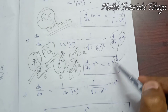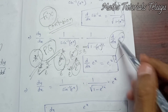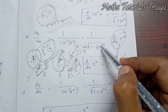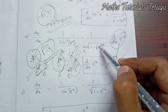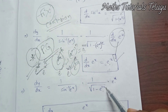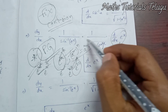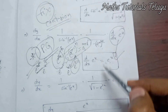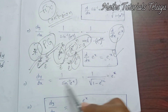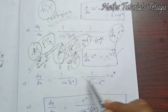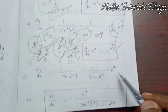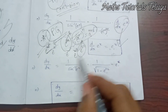So here, e power x whole square equals e power 2x. So the expression becomes dy by dx is equal to 1 divided by sine inverse e power x, into 1 divided by square root of 1 minus e power 2x, into e power x.